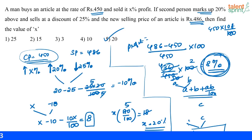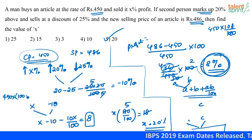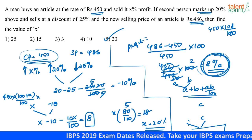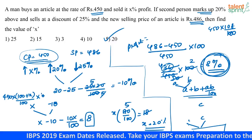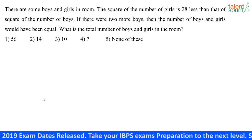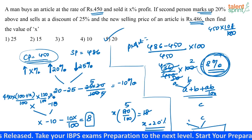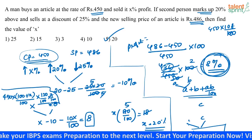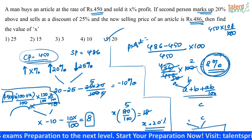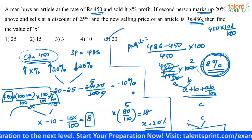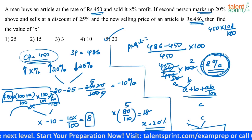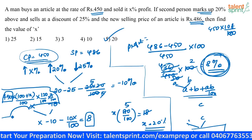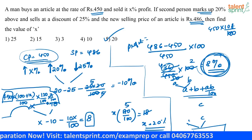Using the traditional method: start with 450 rupees, selling at x percentage profit gives 450 into (100 plus x) by 100. Then a markup of 20 percentage means multiply by 120 by 100, and a discount of 25 percentage means multiply by 75 by 100. All these operations are successive percentage changes on the base price — that is why the concept of effective percentages applies and is faster.